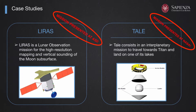There were other missions as well. LIRAS is a lunar observation mission for high-resolution mapping and vertical sounding of the Moon's subsurface. We also worked on a mission named TAIL, an interplanetary mission to travel to Titan and land on one of its lakes. This mission was also presented to NASA scientists who were conducting a study with exactly the same objectives.